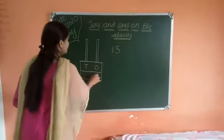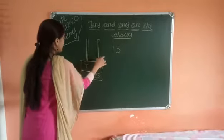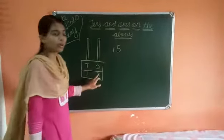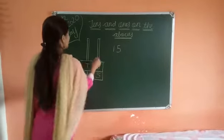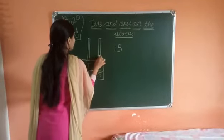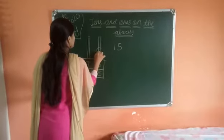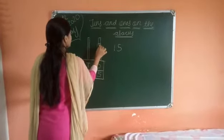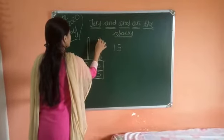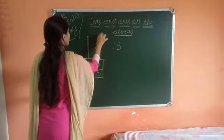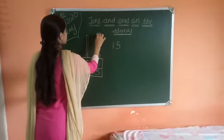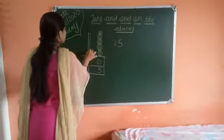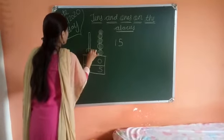We will write: 5 is on the 1s place and 1 is on the 10s place. Now draw 5 marbles: 1, 2, 3, 4 and 5. And here 1 marble, so we will draw 1 marble.